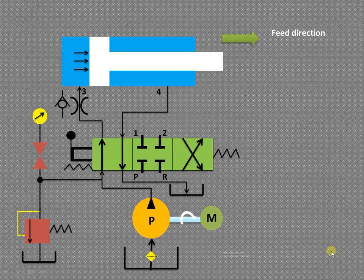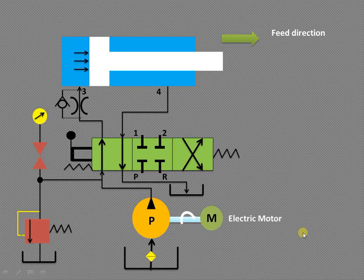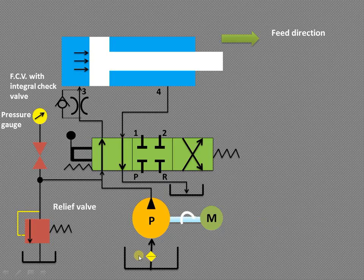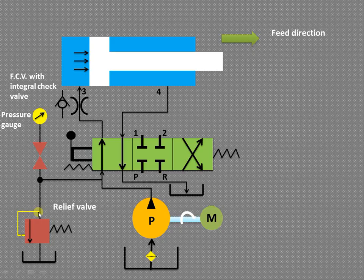The pump is a fixed displacement pump and a unidirectional pump — it is rotating in only one direction, driven by the electric motor as shown. The cylinder shown is a single-acting cylinder; the fluid is acting only on one side of the piston. The pump pumps the fluid from the receiver and then that fluid is sensed by this relief valve.